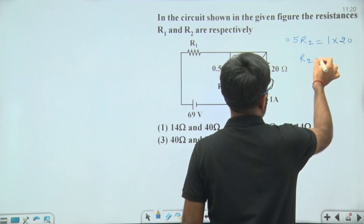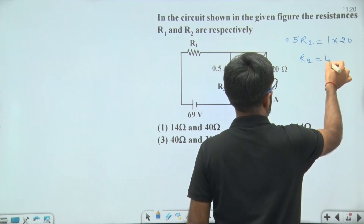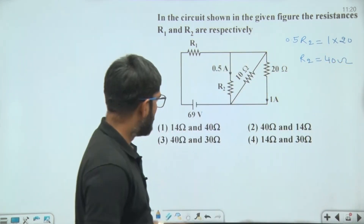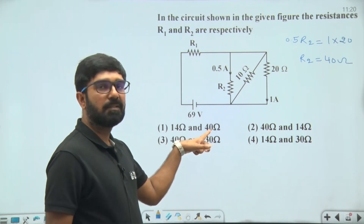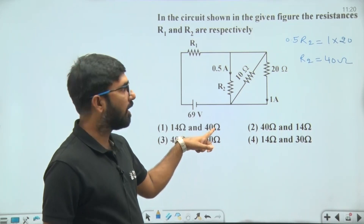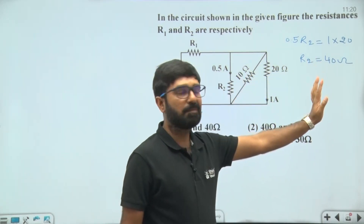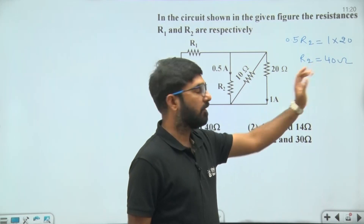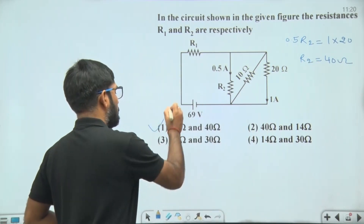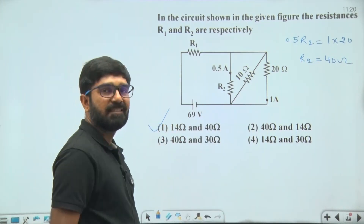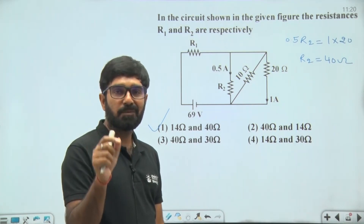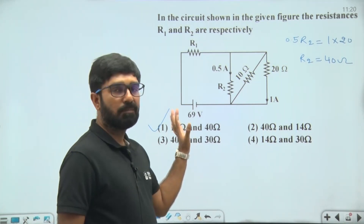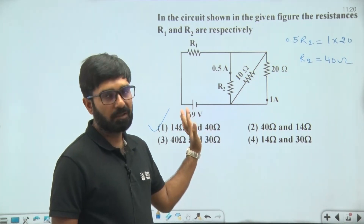Solving this gives R2 = 40 ohm. Out of the four options, only the first option gives R2 = 40 ohm, so from an exam point of view just select the first option and move on. But if you want to solve the complete question for learning purposes, we can further solve this.